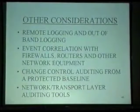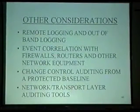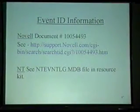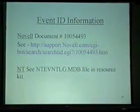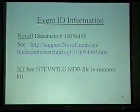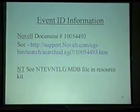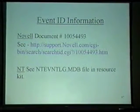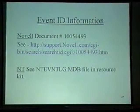Other types of auditing include looking at network transport layer auditing tools - for example, somebody throws a packet at your machine at a port you don't have open. This is where you get event ID information straight off the manufacturer's website. For Novell, that's the document number to get the event IDs. For NT, you can get some off the website, but to get a complete database of them it comes with the NT resource kit - it's a Microsoft Access database. If you query Microsoft's knowledge base on their website, you can get a decent list. For each event, it tells you the different parameters that will be dumped into the log.